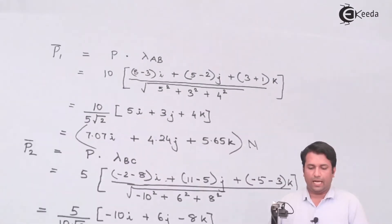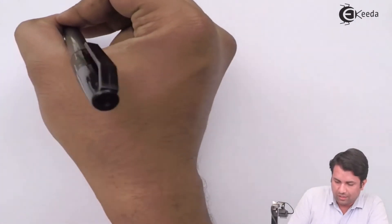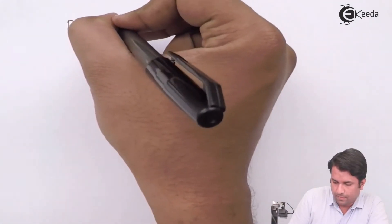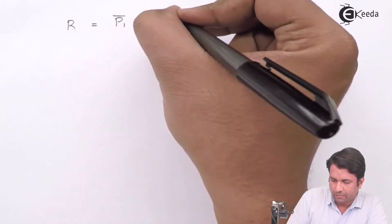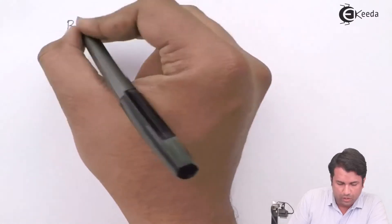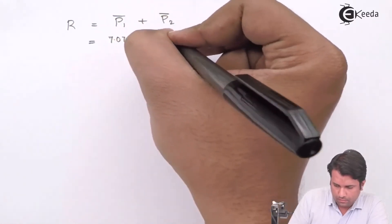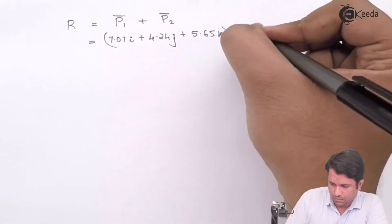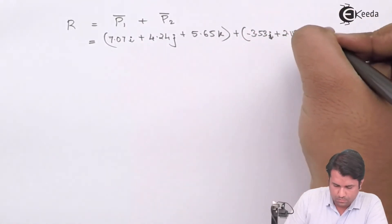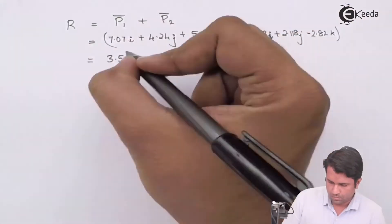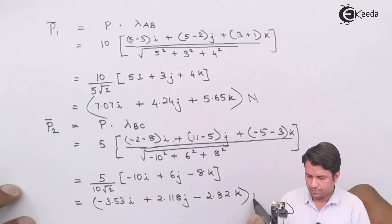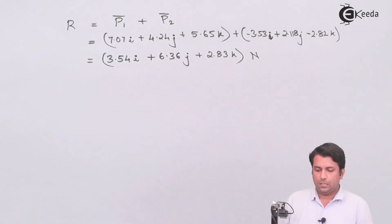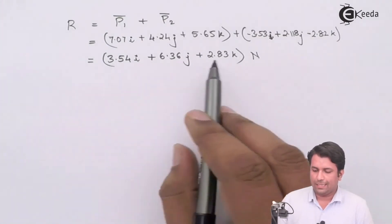Now, to get the resultant, it is the summation of the two force vectors. So the resultant R is force vector P1 plus force vector P2. I now have the resultant force vector.